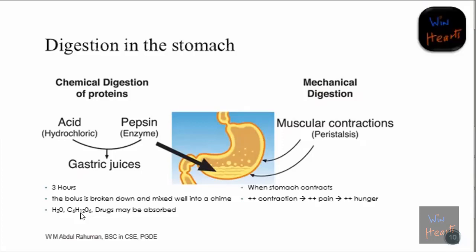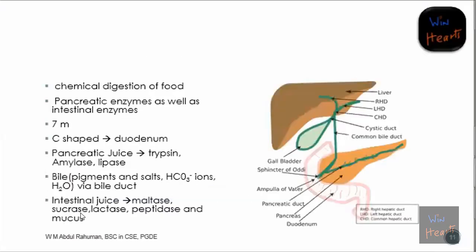When your stomach is empty, the number of contractions will increase. When there is an increased amount of contraction in the stomach, it causes increased pain. This pain is registered in our brain as hunger - that is how we become hungry.